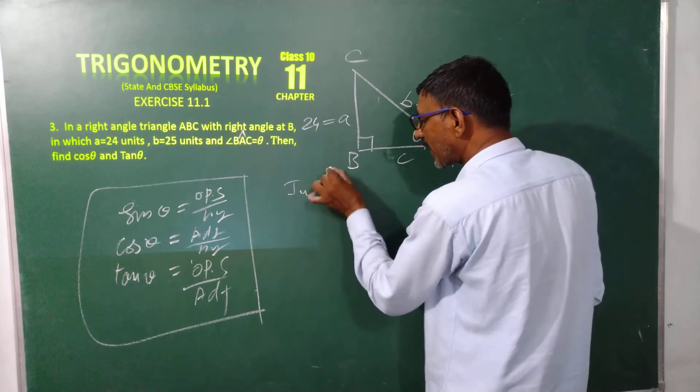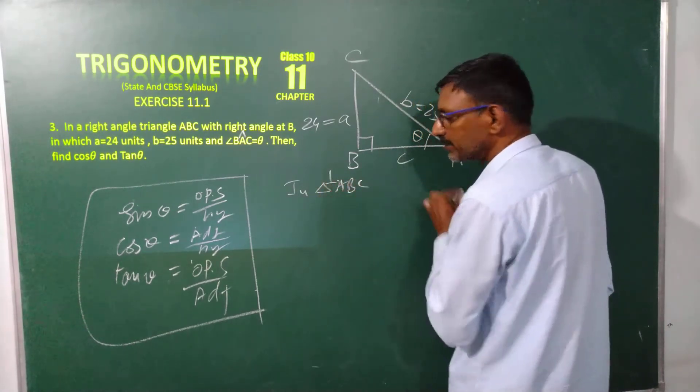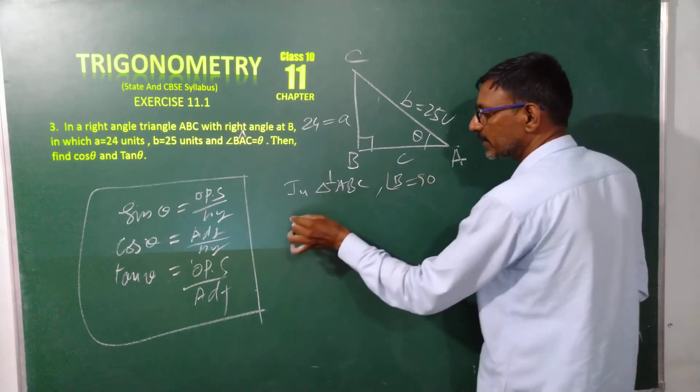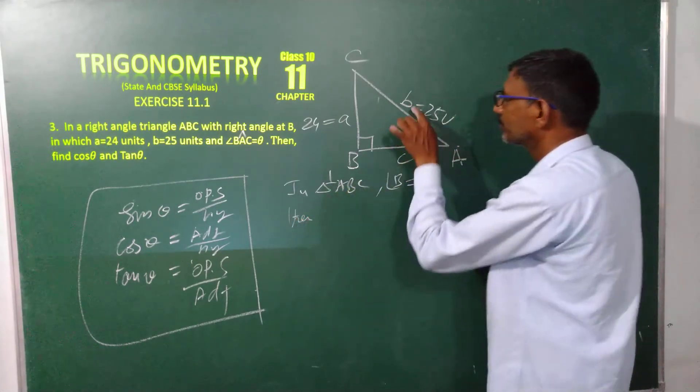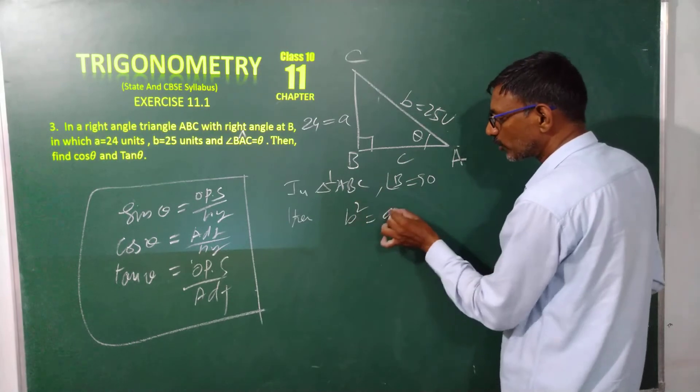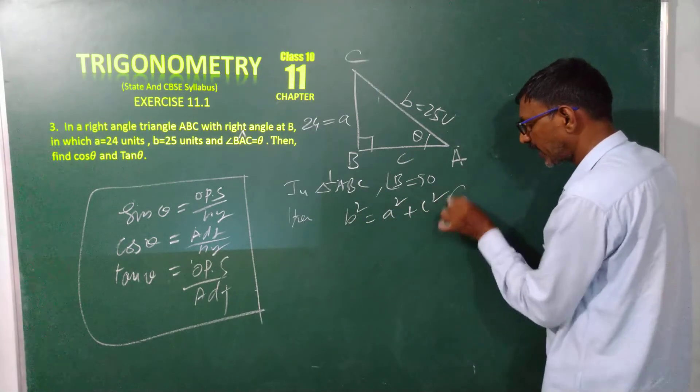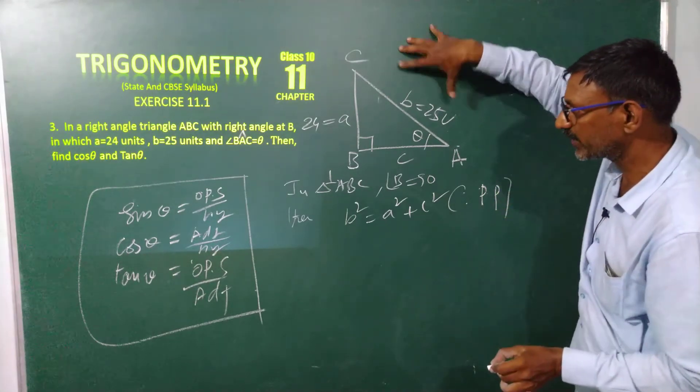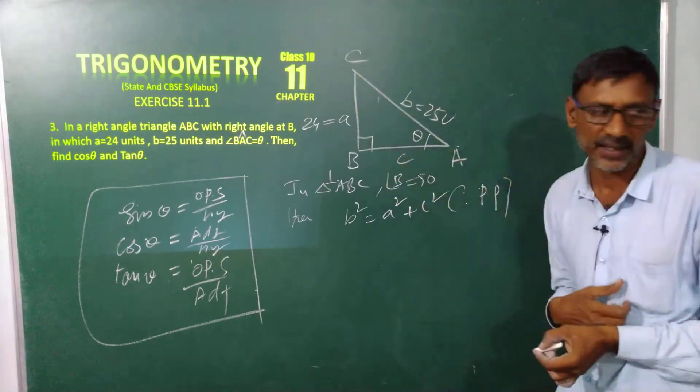In right angle triangle ABC, at angle B is equal to 90 degrees, then b square is equal to a square plus c square. We can write down by Pythagoras theorem: hypotenuse square is equal to sum of the squares of the other sides.